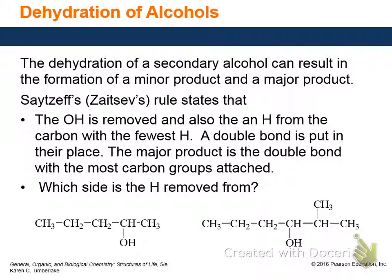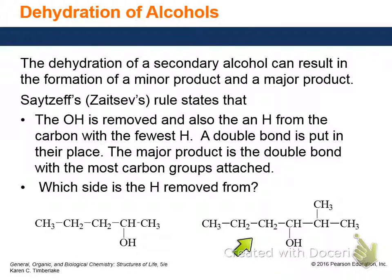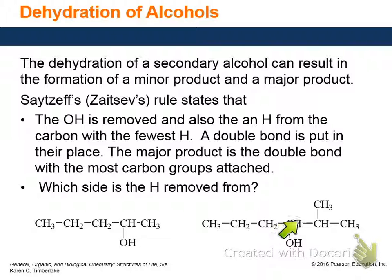Going back to the slide: Zaitsev's rule states that the OH is removed along with the H from the carbon with the fewest hydrogens, and a double bond is put in their place. The major product is the double bond with the most carbon groups attached. So which side is the hydrogen removed from in this example? It has to be removed from here, and the double bond goes to the left — I take this H and this O.